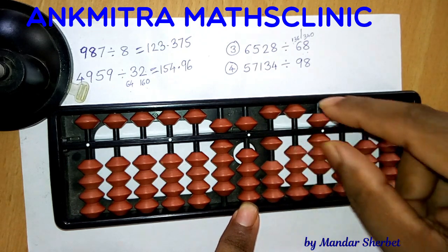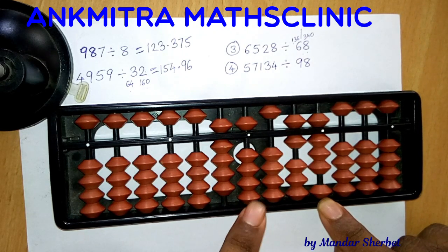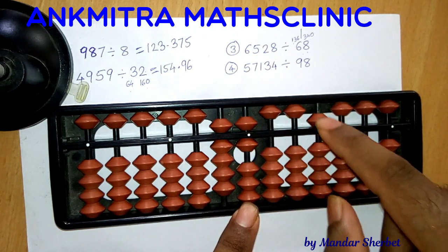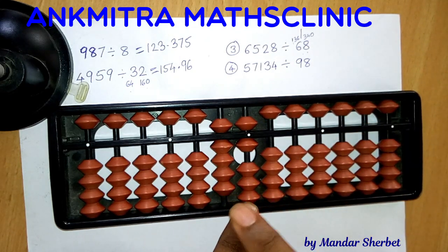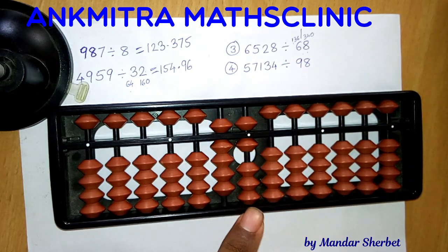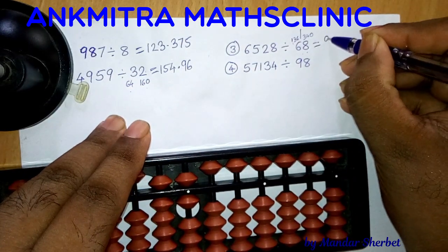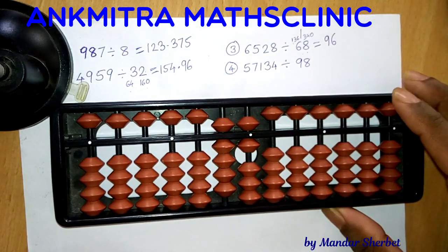We have 68 remaining, so 1 times 68 can be subtracted. I'll add 1 on the answer rod and subtract 68 — our question set is now complete, nothing remaining. The final answer for 6528 divided by 68 is 96. It is a perfectly exact division with no remainder and no decimal answer.